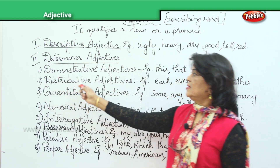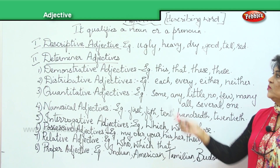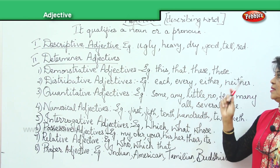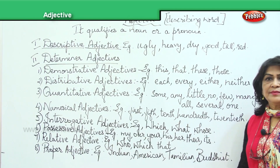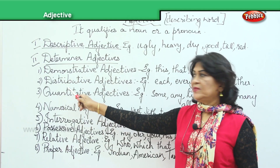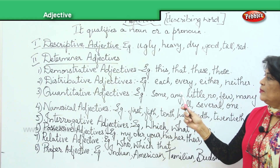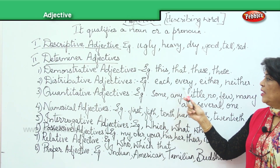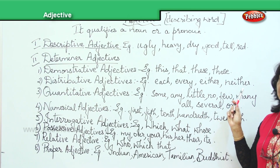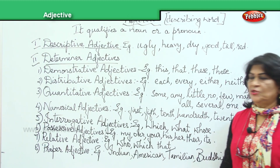First of the determiner adjectives is demonstrative adjectives — examples: this, that, these, those. The second is distributive adjectives — examples: each, every, either, neither.